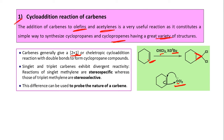Singlet and triplet carbenes exhibit divergent reactivity. If it is singlet methylene (CH₂ carbene), reactions are stereospecific. If it is triplet methylene carbene, then it is stereoselective. By observing what type of final products you are getting, that can help you probe the nature of the carbene: if you are getting a stereospecific product you can predict it is singlet methylene; if it is stereoselective you can predict it is triplet methylene. This gives us information about what type of carbene we have.